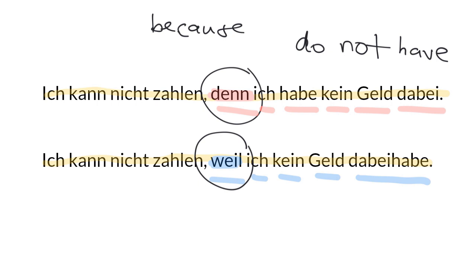Now we could look at denn and weil and say, well, there is a slight difference in meaning. Denn sort of more translates as for or since into English. Whereas weil is definitely because. And you can't start a sentence with a denn clause. This clause here has to be in that second position in terms of clauses. But really I want to look at the word order.